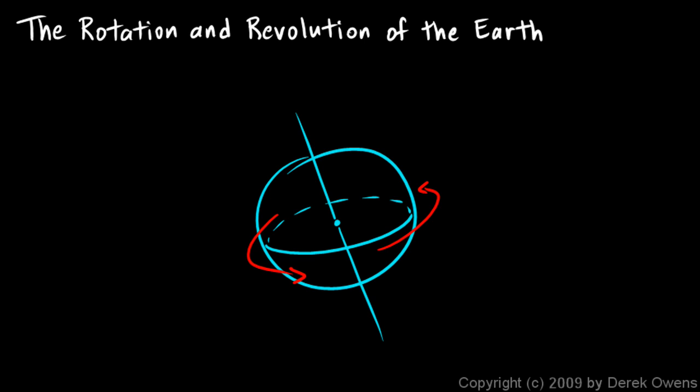The rotation of the earth causes day and night — it causes the sun to rise and set. The sun isn't going around the earth. The sun is really way back in the distance. And as the earth rotates, the sun appears to rise and set from our point of view.